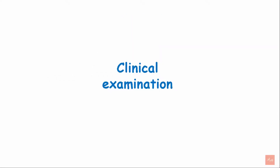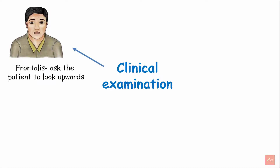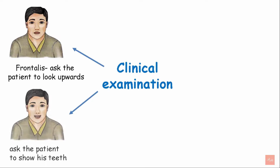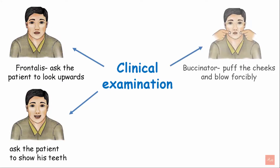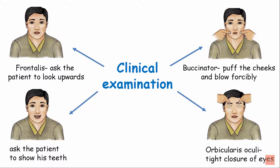For clinical examination: test the frontalis muscle by asking the patient to look upwards without moving the head, then look for normal horizontal wrinkles on the forehead. Ask the patient to show their teeth. For the buccinator muscle, ask the patient to puff the cheeks and blow forcefully. Test orbicularis oculi by tight closure of the eyes.